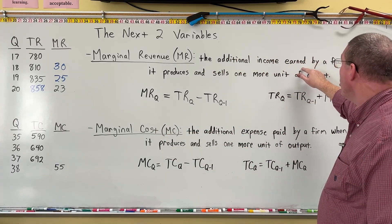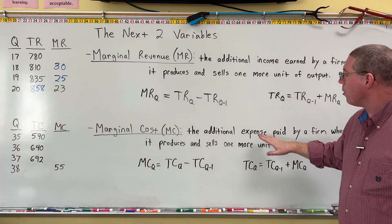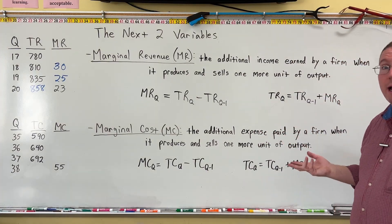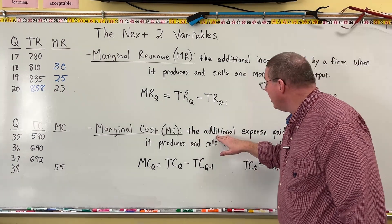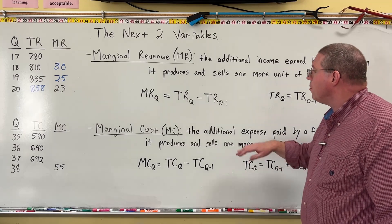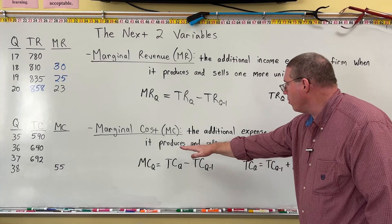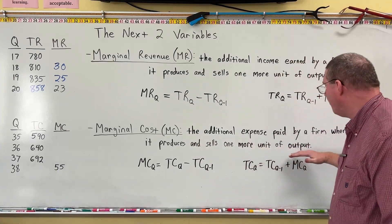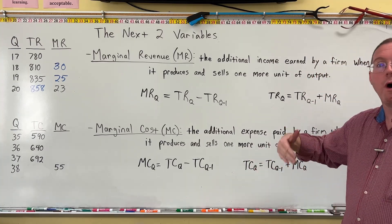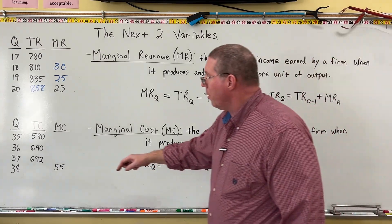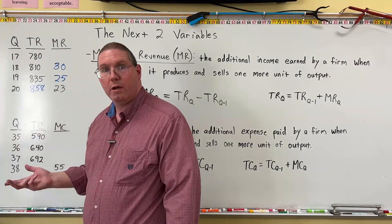Instead of the additional income earned by a firm, marginal cost is the additional expense paid by a firm. All expenses paid by the firm is total cost. So marginal cost is what's added to total cost when the firm produces and sells one more unit of output — one more quantity. For example, going from quantity 35 to quantity 36 is one more unit of output.